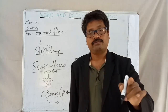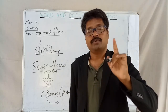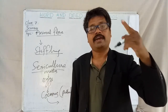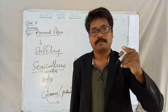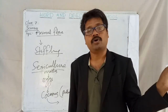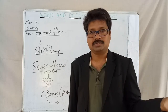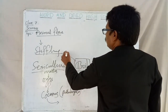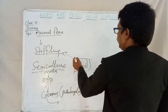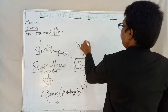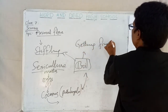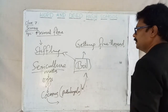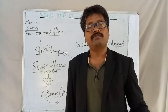If we allow the cocoons for two to three weeks, the fine thread which is covered around the caterpillar's body will get broken and be spoiled — there will be no use of it. So we should boil them. Boiling of cocoons and getting fine thread is nothing but stifling.